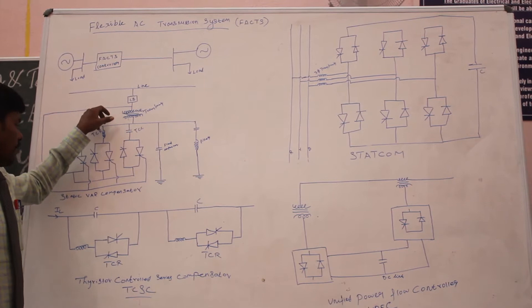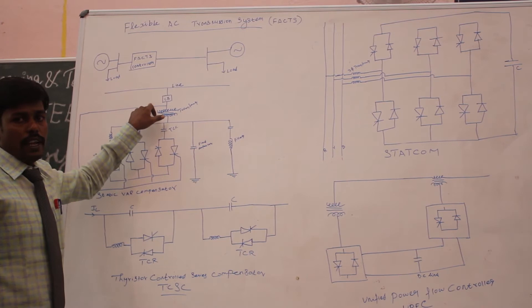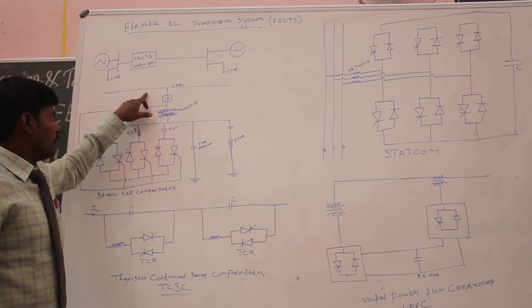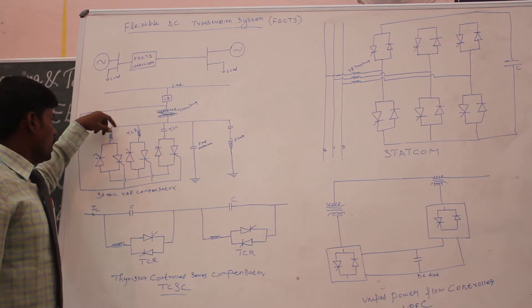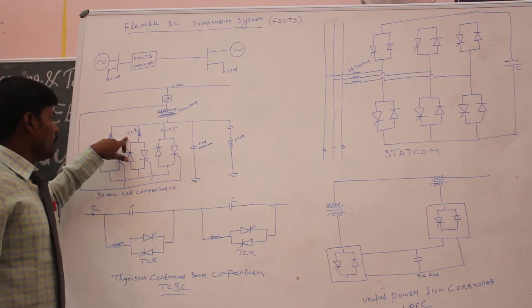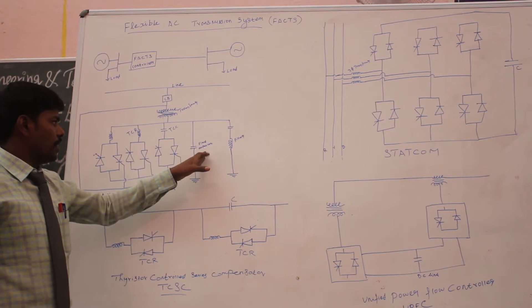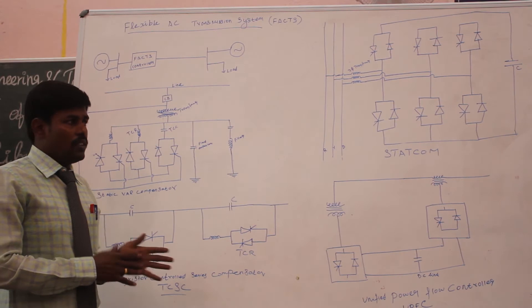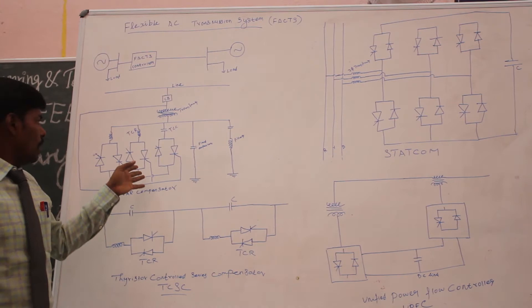This static power compensator is useful for regulating the voltage from the sending side to the receiving side. Here I have the three-phase transformer, and from the transmission line it is connected in shunt. After that it is connected to a number of TCRs and TCCs — thyristor capacitor controllers — and also the thyristor capacitor and filters. The static power compensator uses power electronics devices, specifically thyristors and diodes, with a bidirectional system.